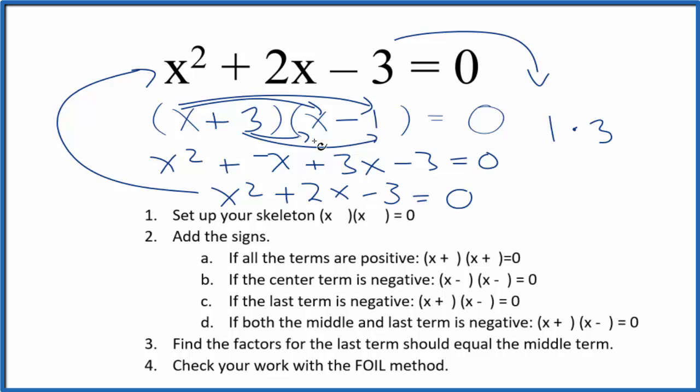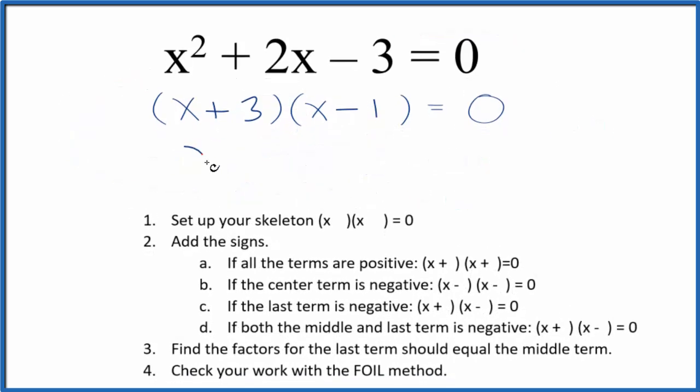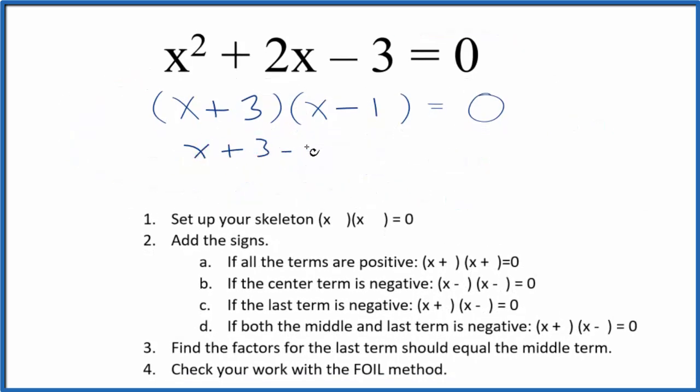Let's use this information here to figure out what values of x, if we put in for x here, would end up giving us 0. So we could say x plus 3 equals 0. So x would equal negative 3. We could also say x minus 1 equals 0. x would then equal just a positive 1.